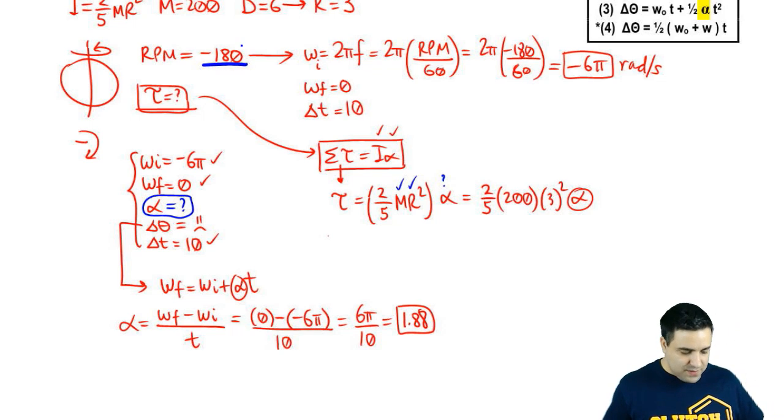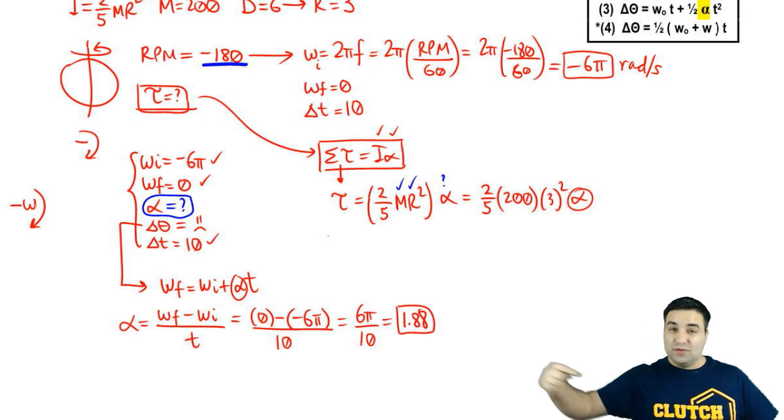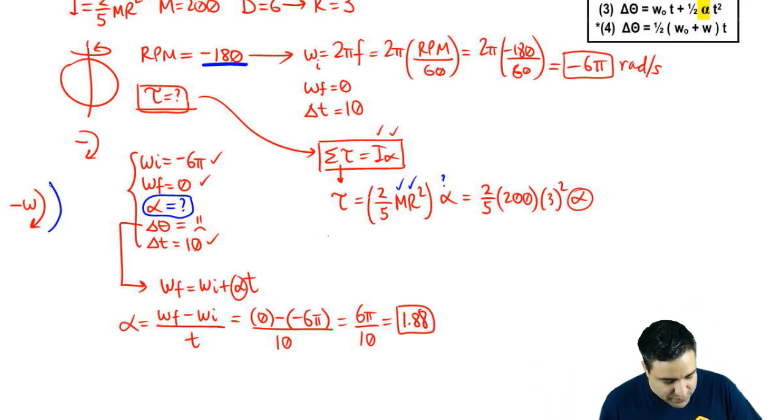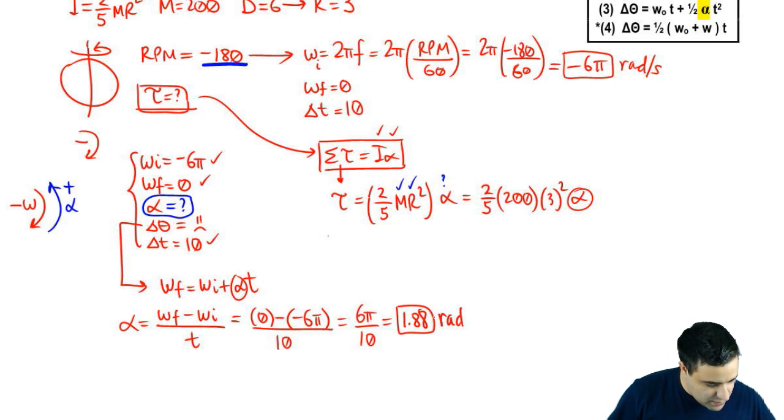Another way to think about this that might be even easier is you have a negative omega and you're trying to slow down. So you have to go in the other direction. The acceleration has to go in the other direction. So the acceleration would oppose it because you're trying to slow down. And this is counterclockwise, which would be positive. My acceleration is 1.8 radians per second squared.